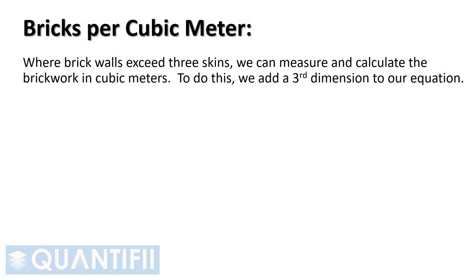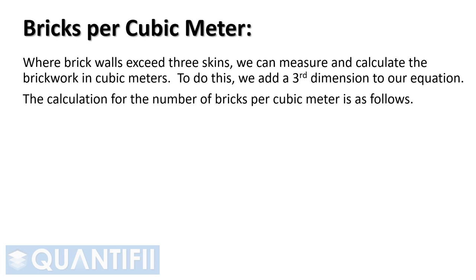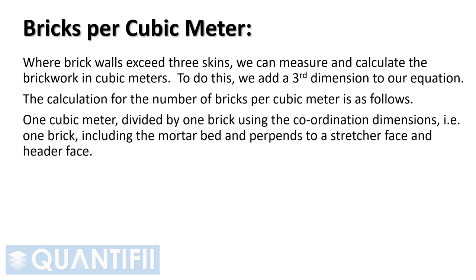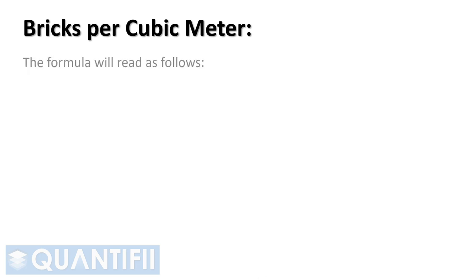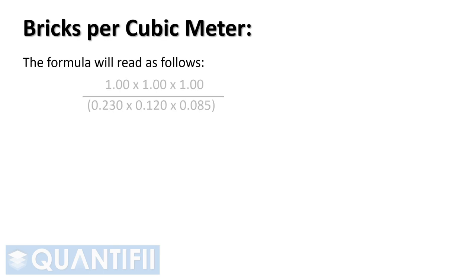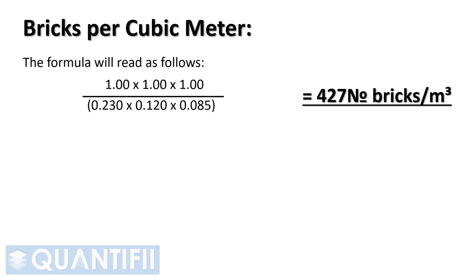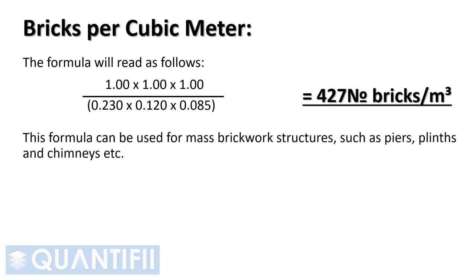Where brick walls exceed three skins, we can measure and calculate the brickwork in cubic meters by adding a third dimension to the equation. The formula for bricks per cubic meter is: 1 ÷ (0.23 × 0.12 × 0.085) = 426.26 bricks, rounded up to 427 bricks per cubic meter. This formula can be used for mass brickwork structures such as piers, plinths, and chimneys.